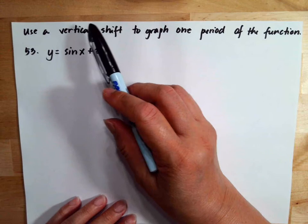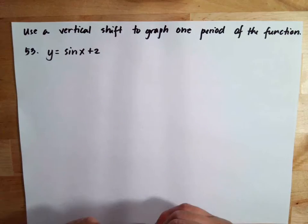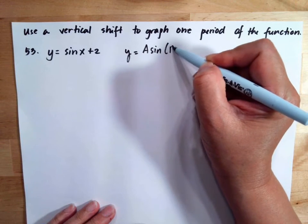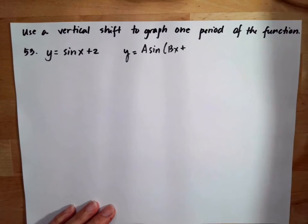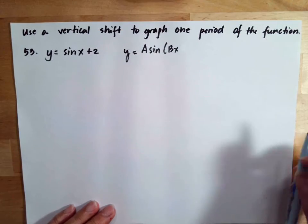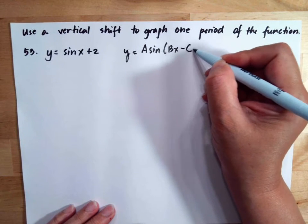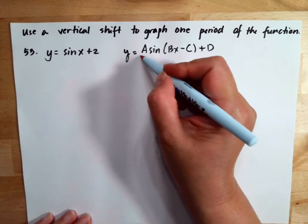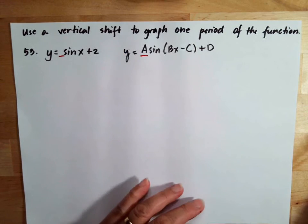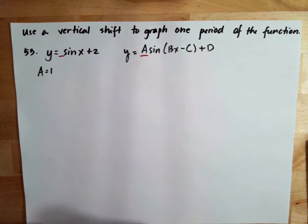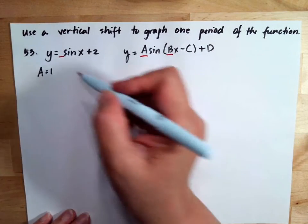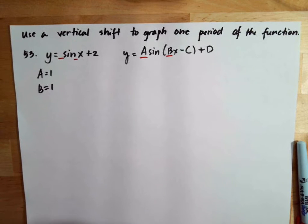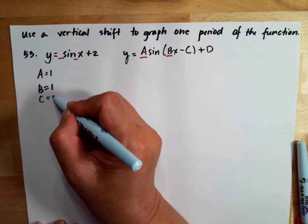Use a vertical shift to graph one period of the function. We have y is equal to a sine bx plus or minus c plus d. The coefficient of sine is a, so if there's no number it's one, giving us a equals one. Then b is the coefficient of x, so if there's no number again it's one, giving us b equals one. There's no c, so c equals zero because there's no parentheses.